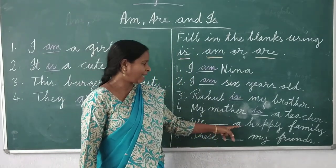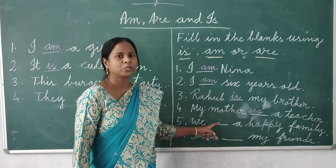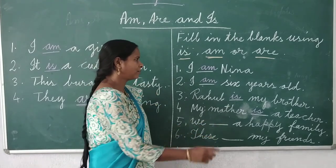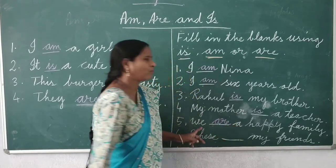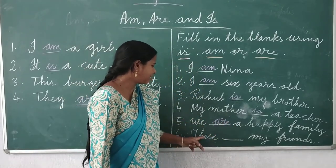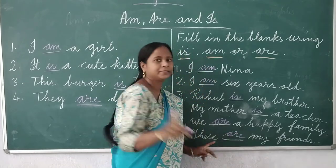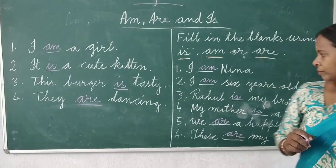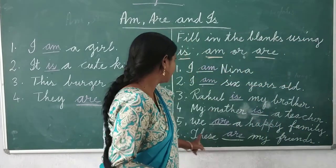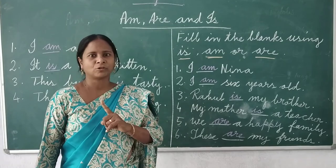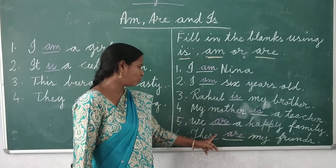We are a happy family. 'We' means more than one person, so we use 'are'. Next: these are my friends. 'These' means more than one person — how many friends are we talking about? More than one. Note: 'this' refers to only one person or thing, while 'these' refers to more than one. Many friends, so we use 'are'.